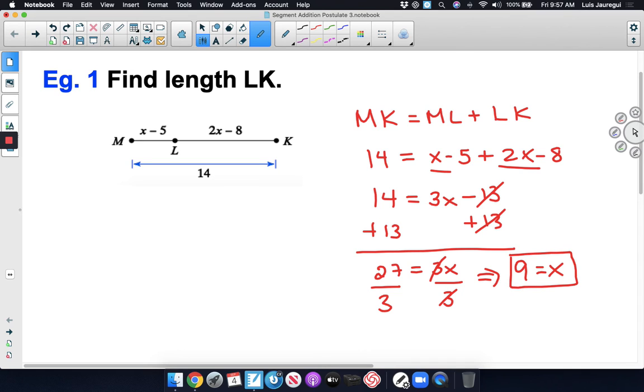And at this time, we might be thinking we're already done. No. In fact, we're not done yet because what we're looking for is the length LK. So here, what we need to do is write down the expression for the length LK. Notice that LK is equal to 2x minus 8. Now, what we need to do is substitute in x equals 9 into the expression and evaluate it. So this is equal to 2 times 9 minus 8. Notice 2 times 9 is 18. So we have 18 minus 8 is equal to 10.